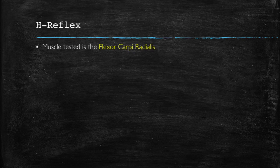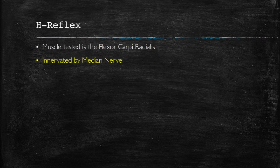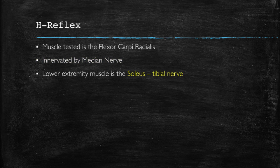Let's quickly discuss some of the other major testable points on the H-reflex. The C7 nerve root is going to correspond to testing of the flexor carpi radialis, the FCR muscle, which is innervated by the median nerve. In the lower extremity, the tibial nerve feeds the soleus muscle, which corresponds to the S1 reflex.